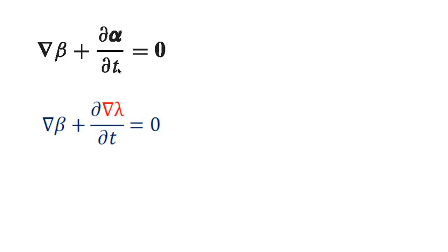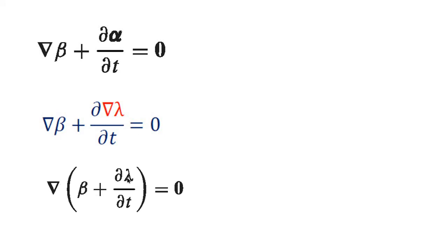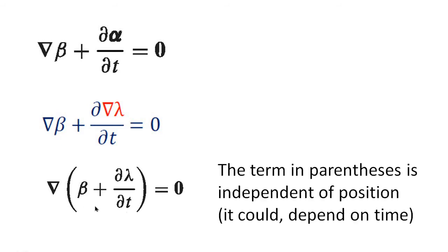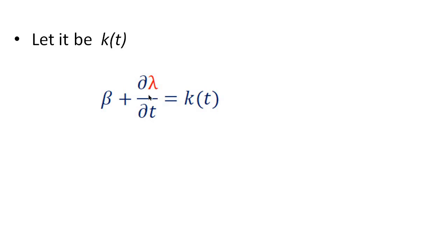So we get grad(beta) plus d(alpha)/dt equal to zero, or grad(beta) plus d(lambda)/dt equal to 0. The term in parenthesis — grad(beta) plus d(lambda)/dt — is independent of position, but it could depend on time. Let it be k(t).